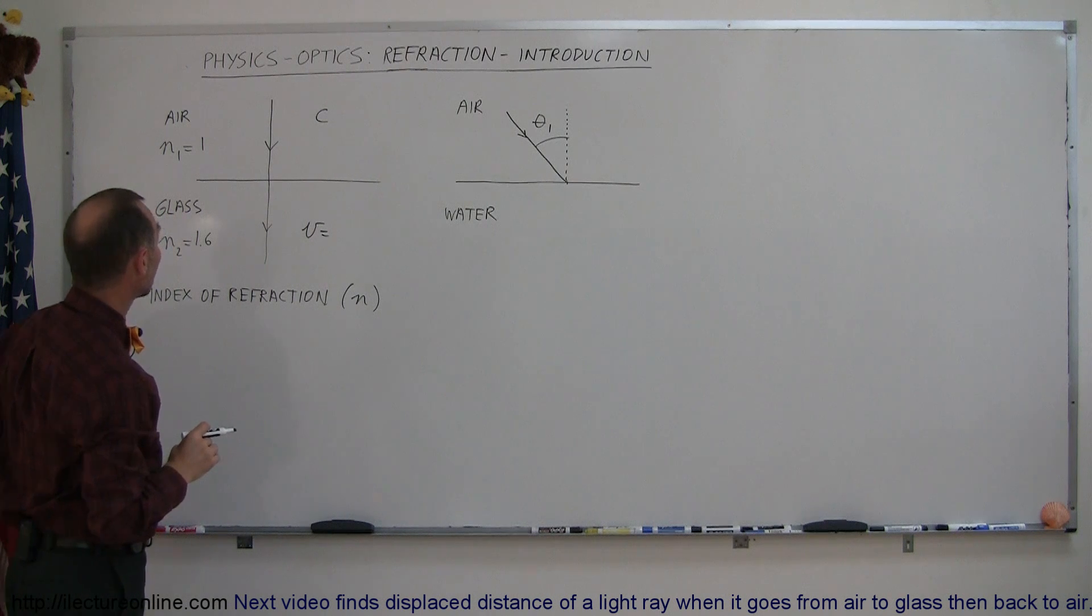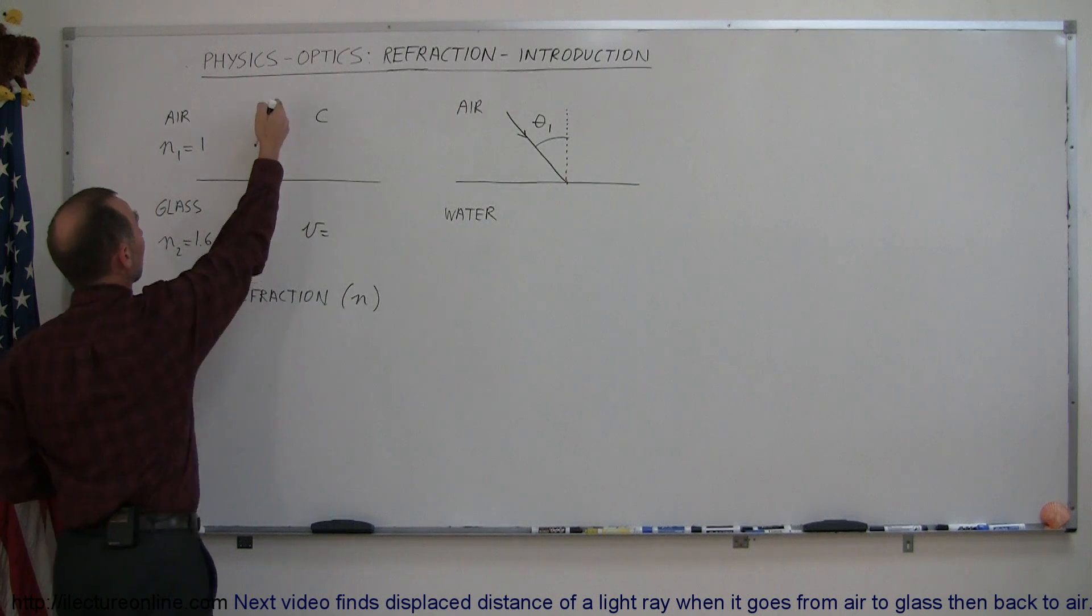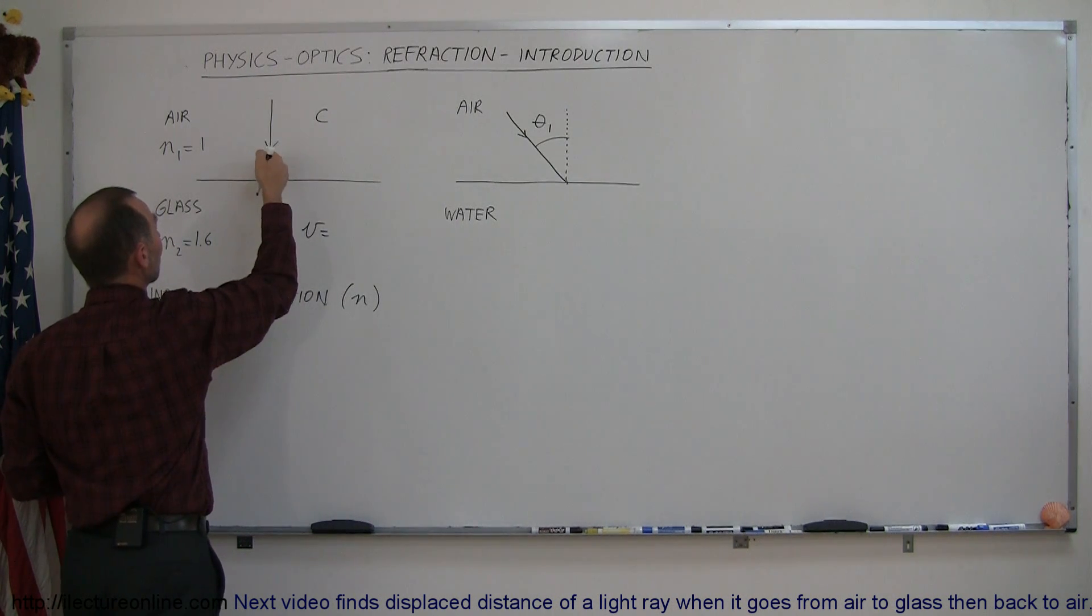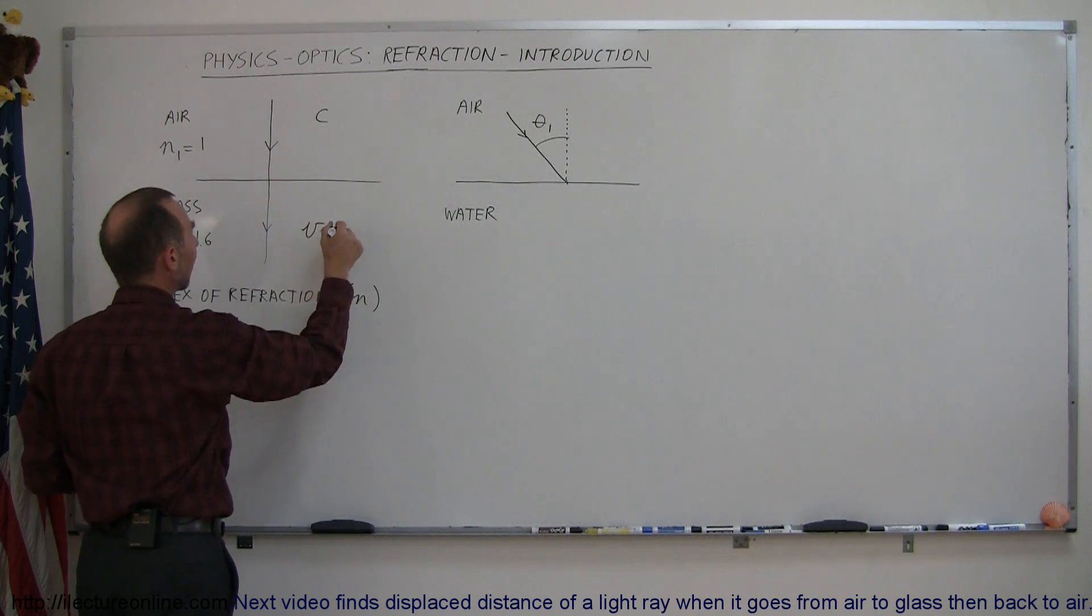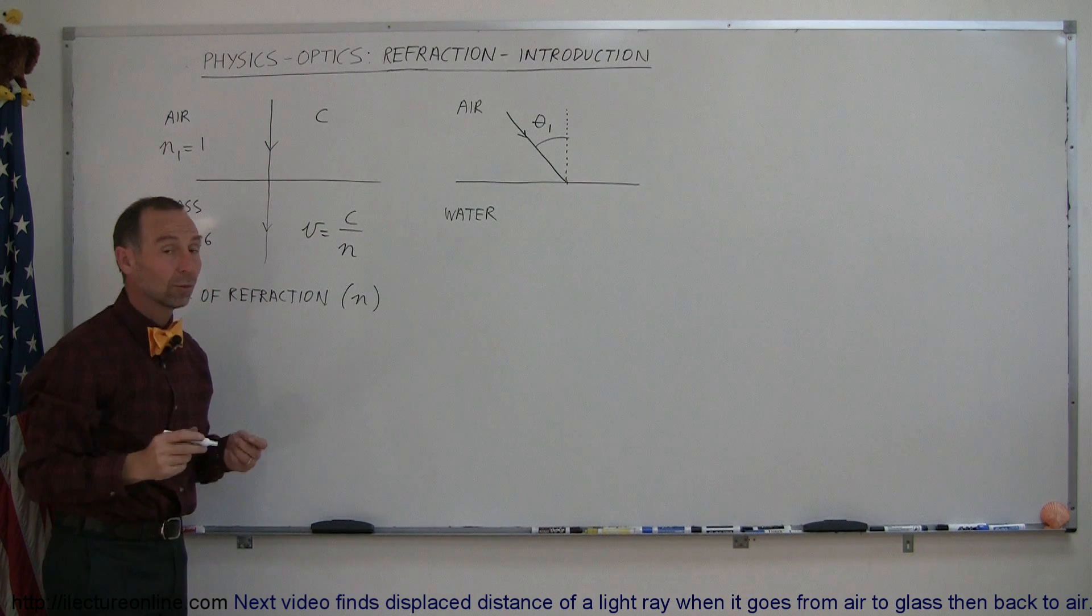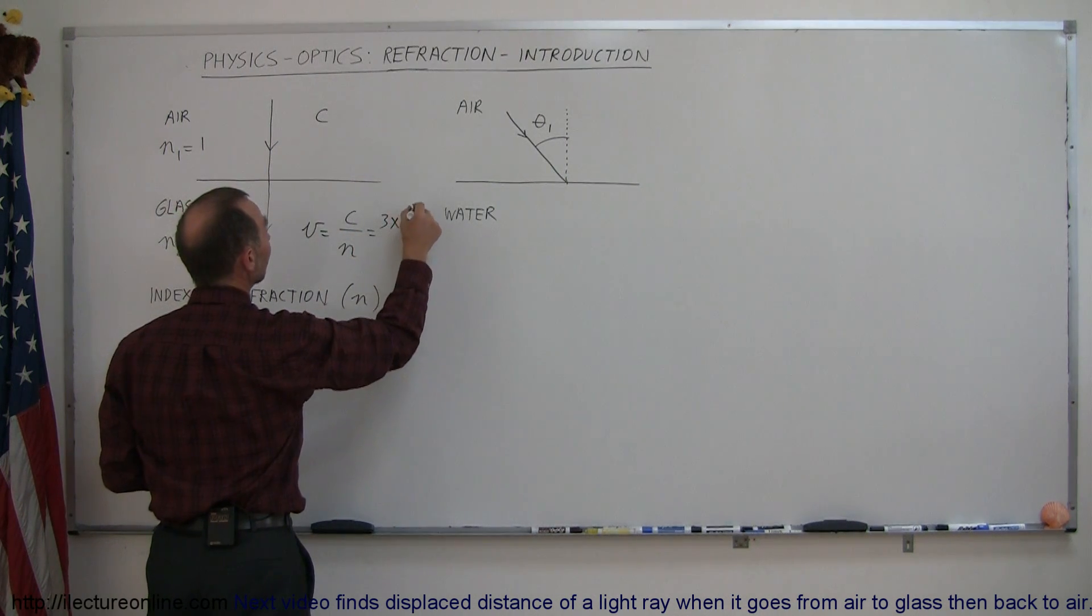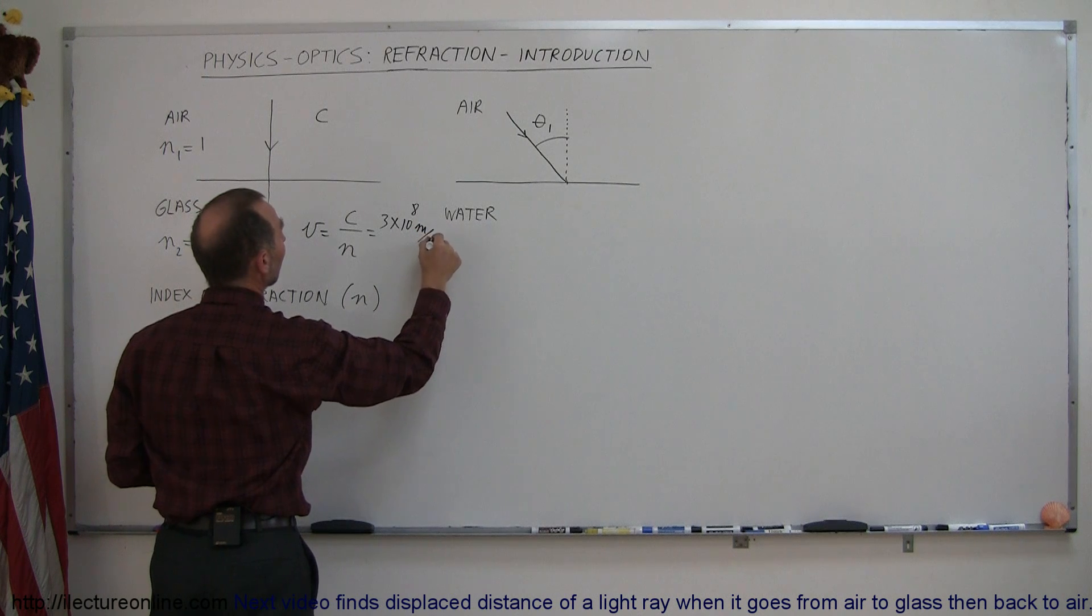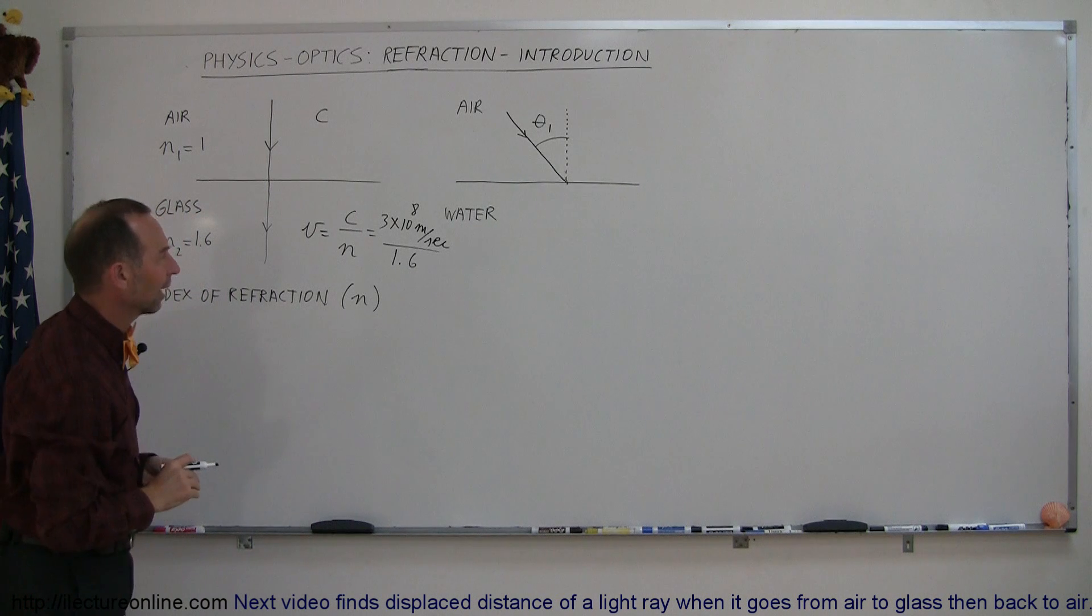Then what does that mean as far as the travel of light through these two mediums? Well, if the velocity of light is c when it travels through air, then the velocity once it travels in the glass is equal to c divided by the index of refraction. In this case we know that c is 3 times 10 to the 8 meters per second, and then we divide that by 1.6.